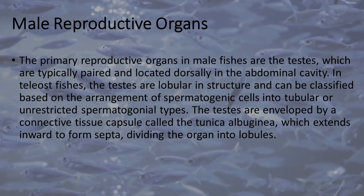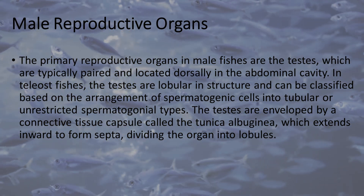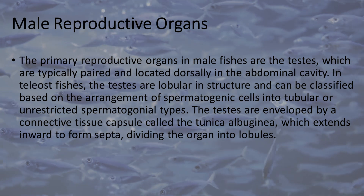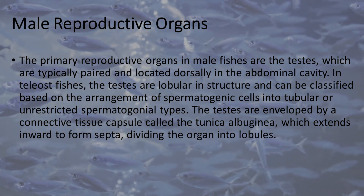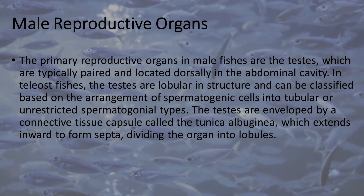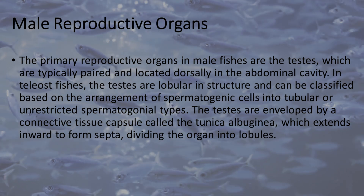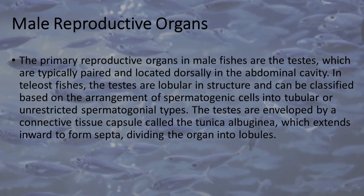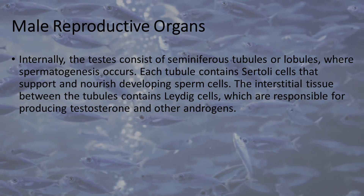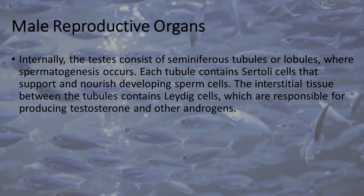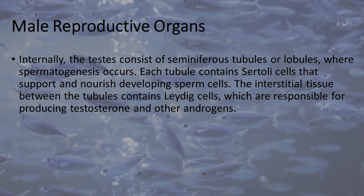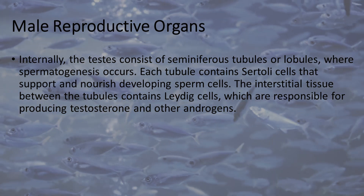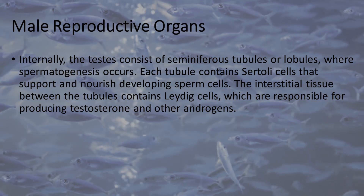Male Reproductive Organs. The primary reproductive organs in male fishes are the testes, which are typically paired and located dorsally in the abdominal cavity. In teleost fishes, the testes are lobular in structure and can be classified based on the arrangement of spermatogenic cells into tubular or unrestricted spermatogonial types. The testes are enveloped by a connective tissue capsule called the tunica albuginea, which extends inward to form septa, dividing the organ into lobules. Internally, the testes consist of seminiferous tubules or lobules where spermatogenesis occurs. Each tubule contains Sertoli cells that support and nourish developing sperm cells. The interstitial tissue between the tubules contains Leydig cells, which are responsible for producing testosterone and other androgens.